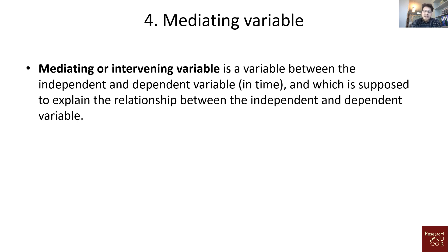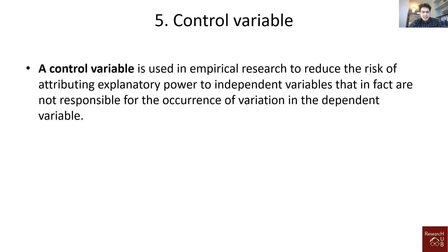A mediating or intervening variable is a variable that sits between the independent and dependent variable — often in time, when we are looking at cause-and-effect relationships — and is supposed to explain the relationship between the independent and the dependent variable. Finally, the control variable is used in empirical research to reduce the risk of attributing explanatory power to independent variables that are not actually responsible for the variation in the dependent variable.